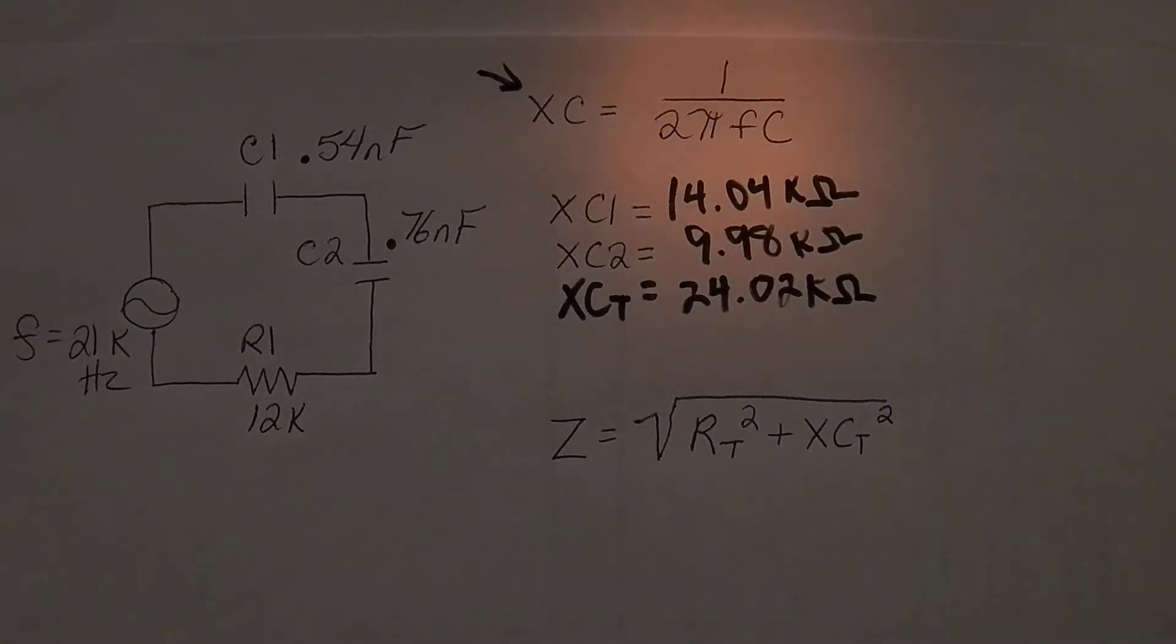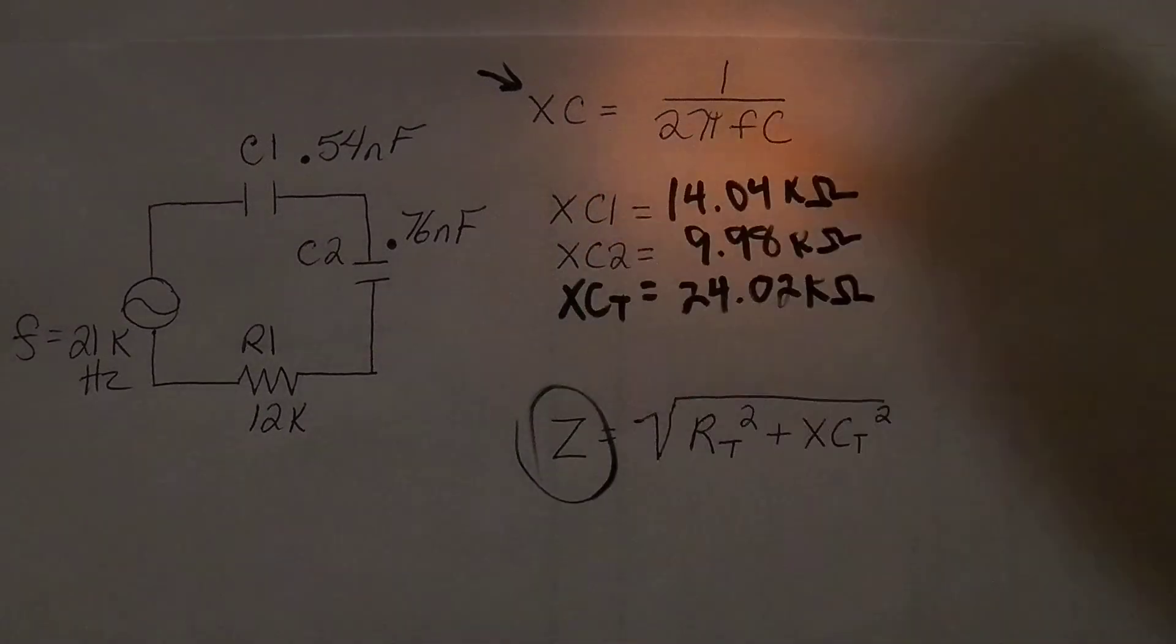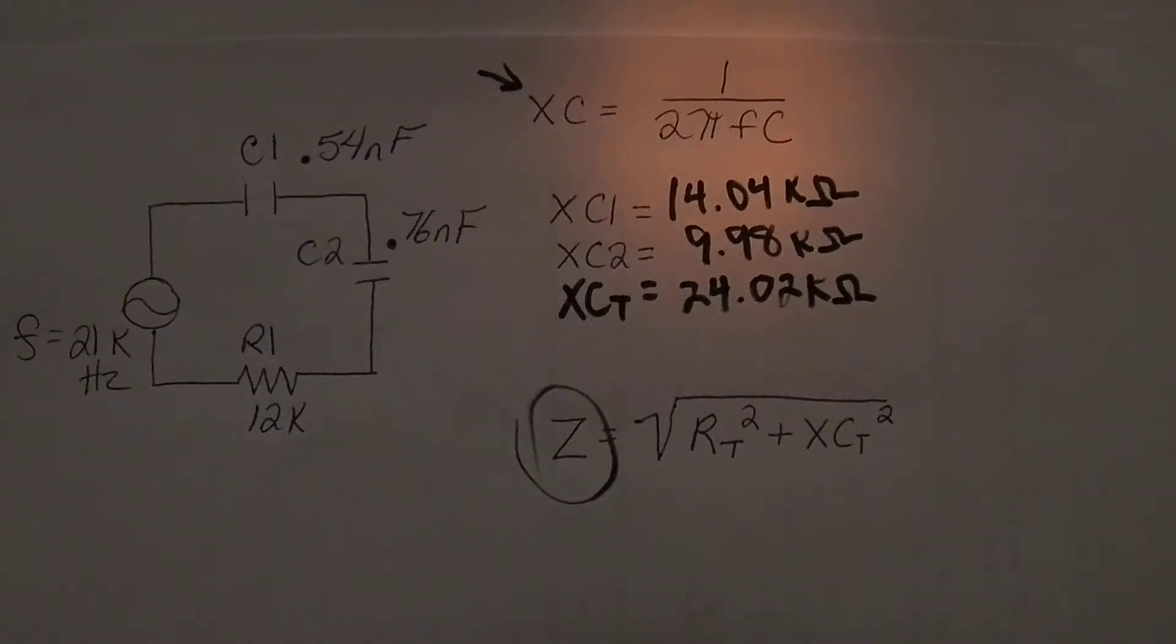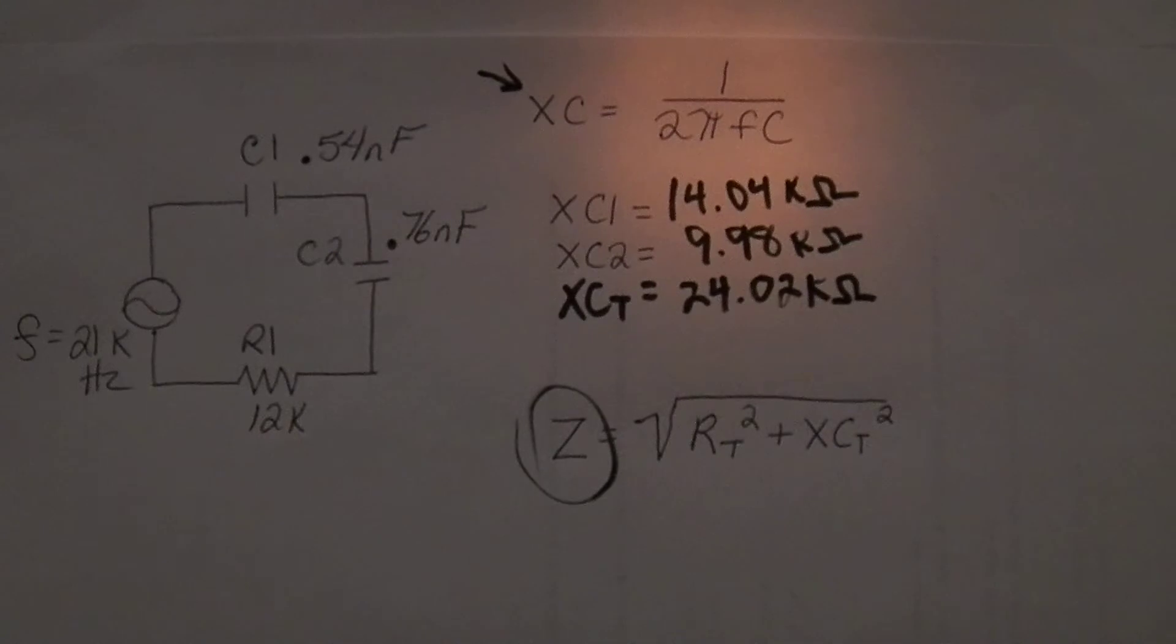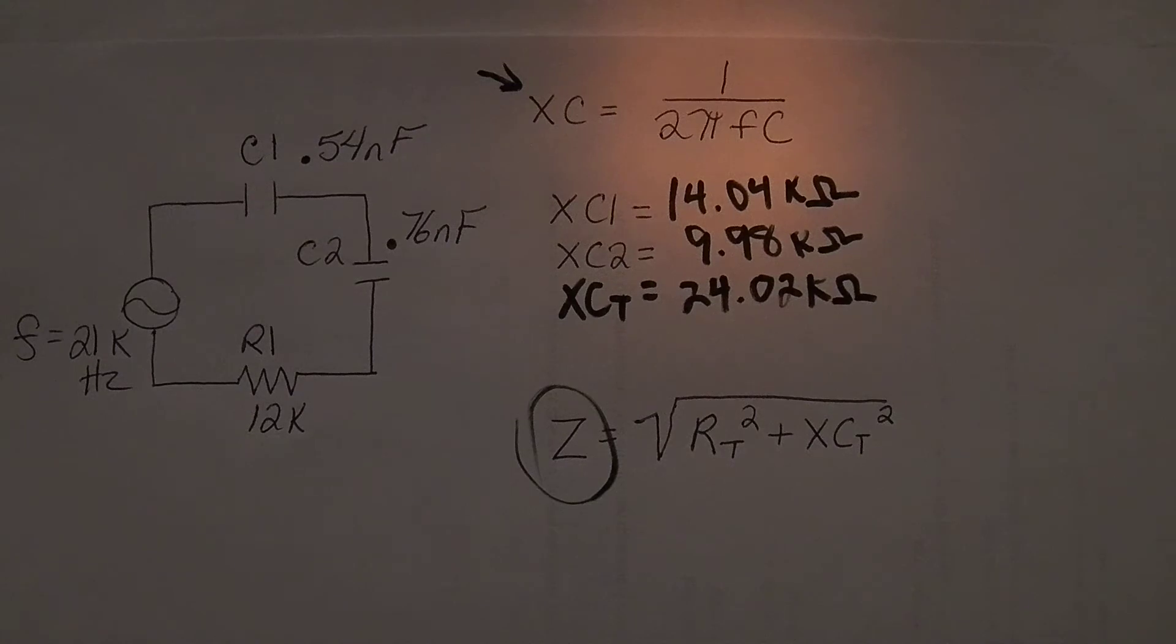So now I can figure out impedance, which is Z. So if I'm trying to figure out impedance, I take my total resistance, which since I only have the one resistor, I can take 12K. So I'm going to put in 12 shift and then 6 which is my kilo, and then I'm going to hit my squared button and add that to my total capacitive reactance which is 24.02 shift K, and I'm going to square that.